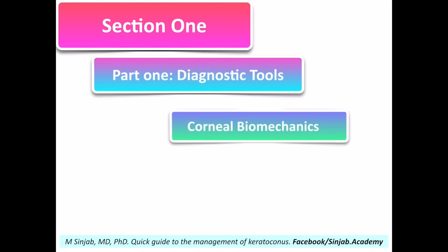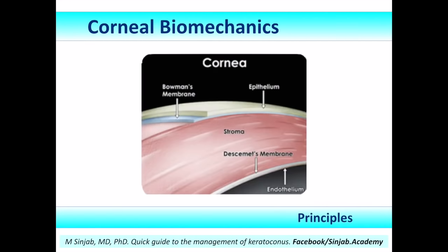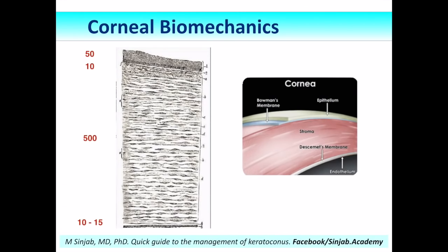Section 1, Part 1: Diagnostic Tools — Corneal Biomechanics. Before discussing corneal biomechanics in depth, let's look at the structure of the cornea. The cornea is composed of six layers: the tear film, the epithelium, Bowman's membrane, the stroma, Descemet's membrane, and the endothelium. The epithelium is about 50 microns thick, Bowman's membrane is 8 to 10 microns, the stroma — the bulk of the cornea — is about 500 microns, and Descemet's membrane with the endothelium is about 10 to 15 microns in adulthood.